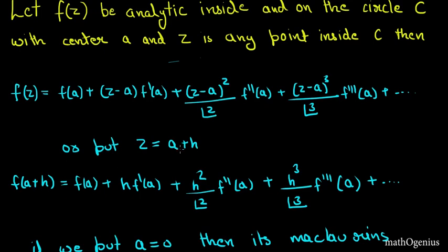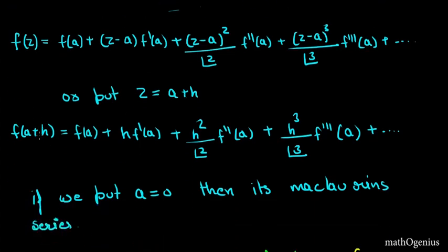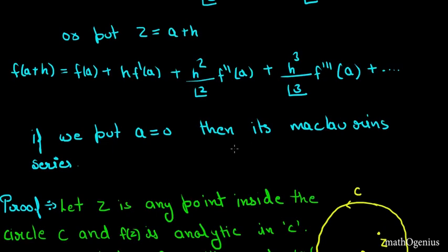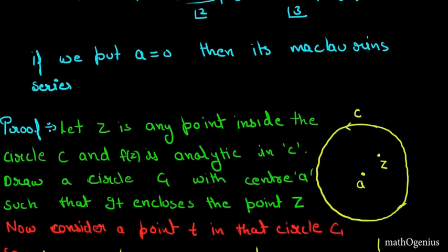This is the general expression. We can also change it by substituting z = a + h, which transforms the series so that (z−a) becomes h, giving: f(a+h) = f(a) + h·f'(a) + h²/2! · f''(a) + ... Also, if we put a = 0, then it becomes the Maclaurin series for complex analysis.